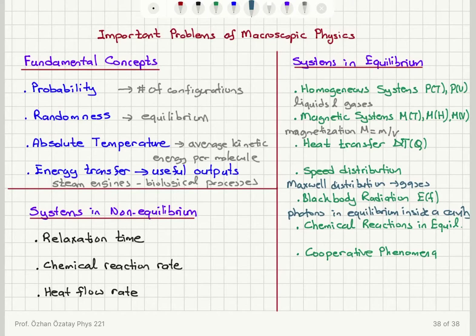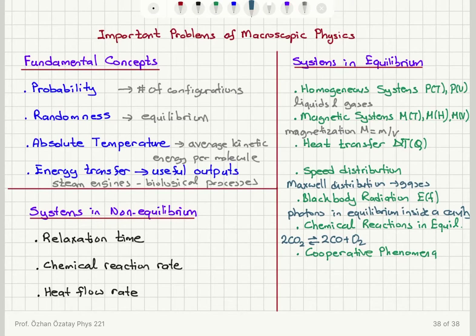When it comes to chemical reactions at a given temperature, at the equilibrium situation — for example, the reaction 2CO₂ producing 2CO plus O₂ gas — when we have equilibrium, what is the fraction of carbon monoxide, oxygen, and carbon dioxide? That's the equilibrium description.